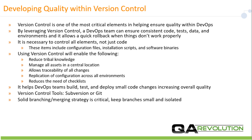It is necessary to control all elements, not just code. These items include configuration files, installation scripts, and software binaries. Using version control will enable the following: reduce tribal knowledge, manage all assets in a central location, allow traceability of all changes, replication of configuration across all environments, and reduce the need for checklists. It helps DevOps teams build, test, and deploy small code changes, increasing overall quality. A few version control tools include Subversion or Git. It is important to practice a solid branching and merging strategy and keep all branches small and isolated.